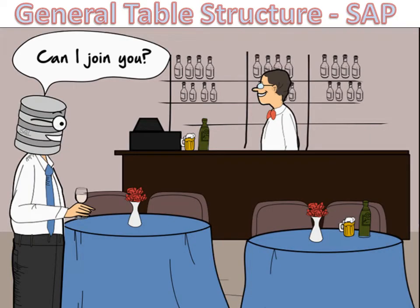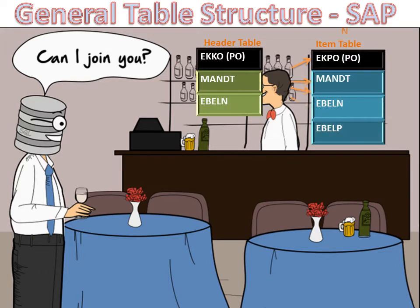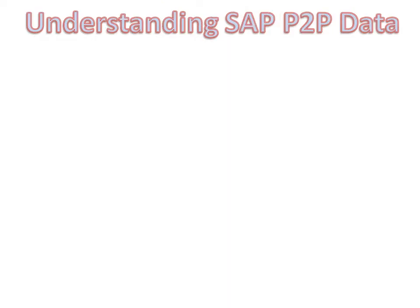The general table structure for SAP tables is created keeping the following things in mind: header and item tables are different, having a one-to-N relationship between them, and there are history tables for all important business processes to track the changes made to them. There are also log tables inside SAP which we will discuss in upcoming videos. Every business process, be it procure to pay, order to cash, AR, or AP, has well-defined table guidelines and rules which are similar in all cases.